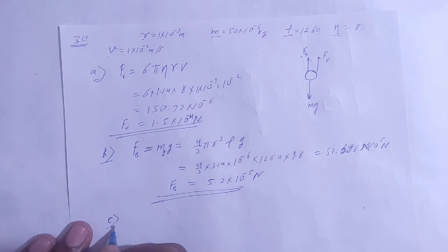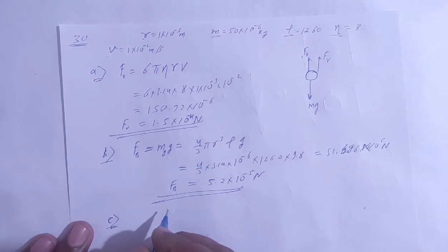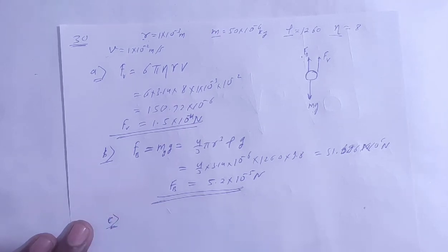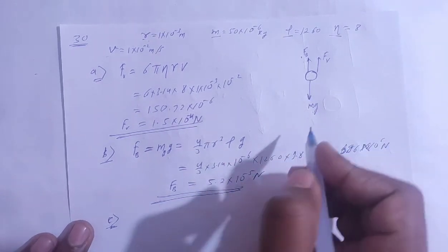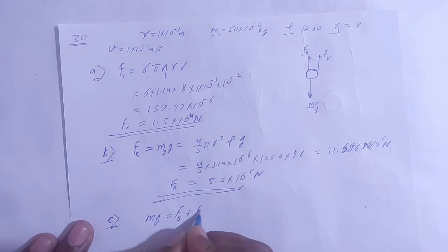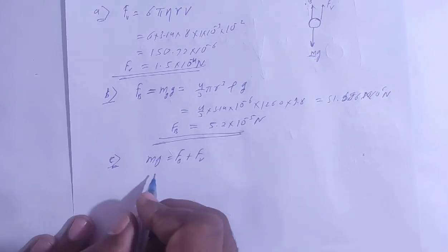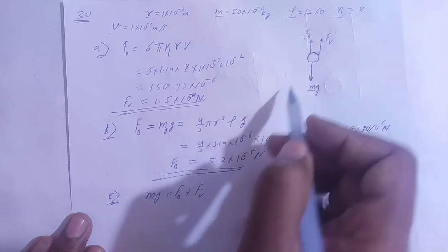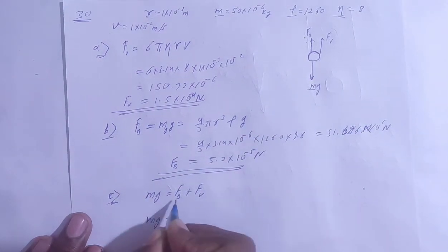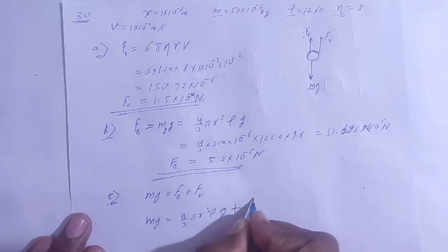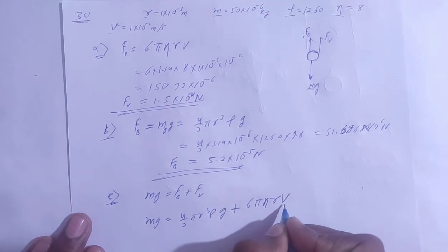For Part C, we find the terminal velocity with which the sphere moves down without acceleration. At terminal velocity, Mg equals the buoyant force plus the viscous force. Here, buoyant force is (4/3) π r³ ρ g and viscous force is 6π η r v (Stokes' law).